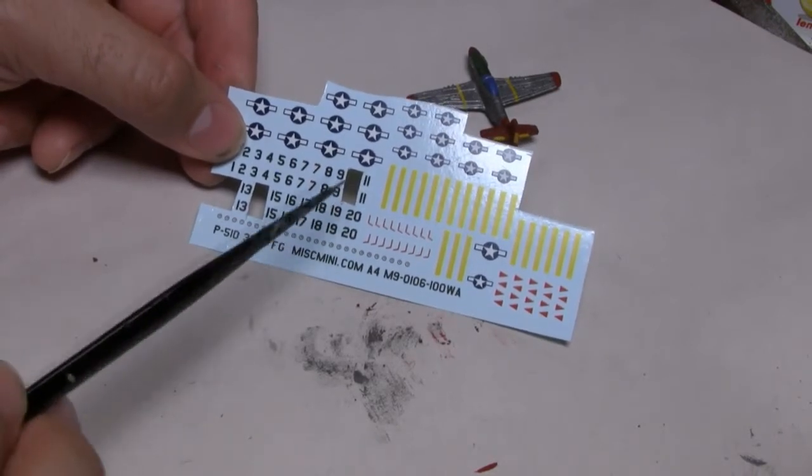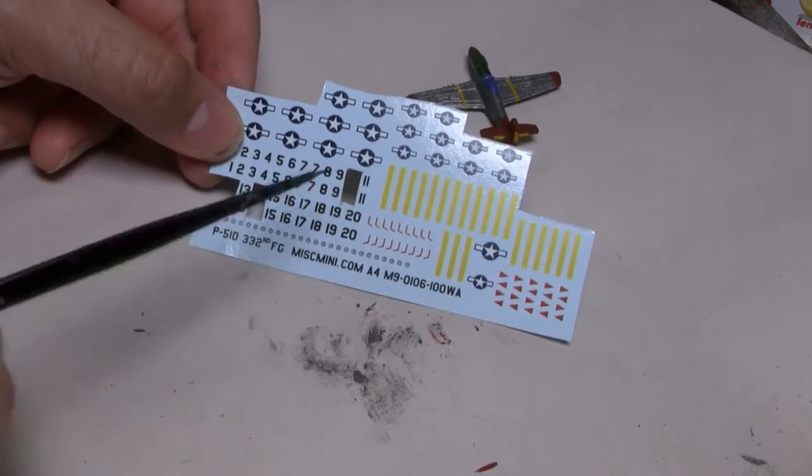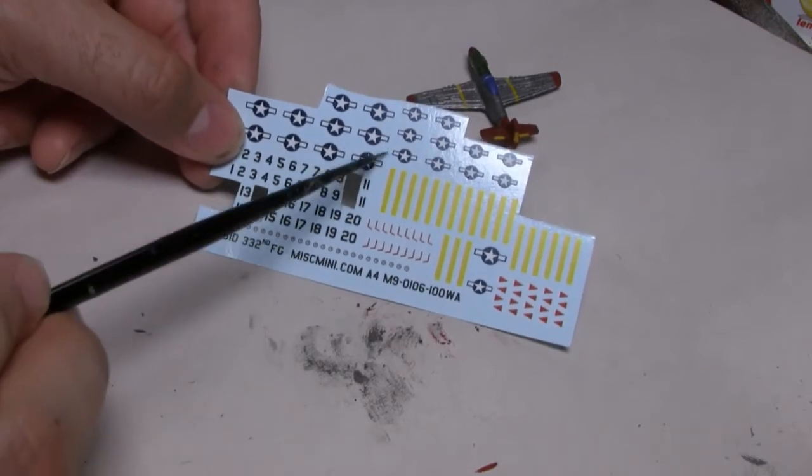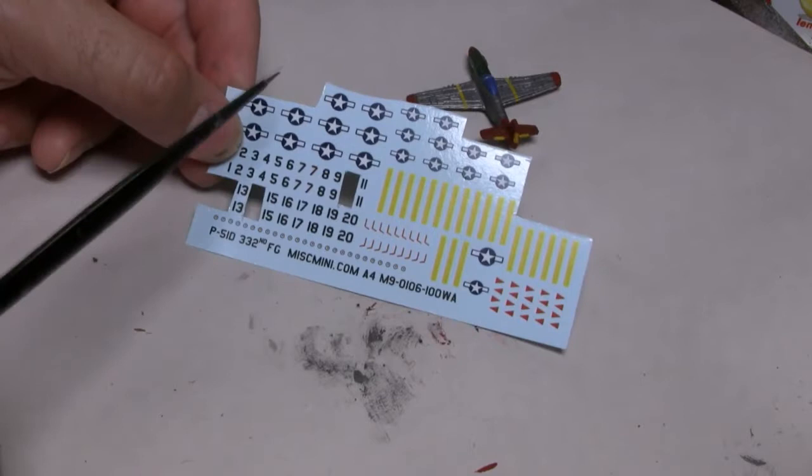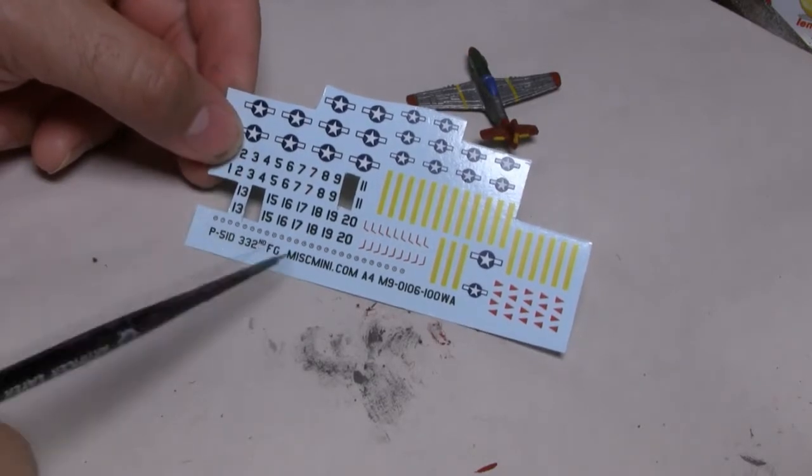The one thing to note about these particular water transfer decals is unlike games workshops, they're not individually cut out. They're in one sheet of, I guess, plastic. So you need to make sure that when you cut out the piece, you've got to trace around it very carefully with the X-Acto blade.